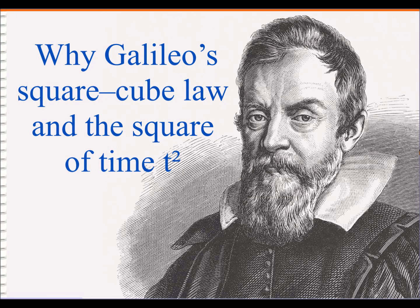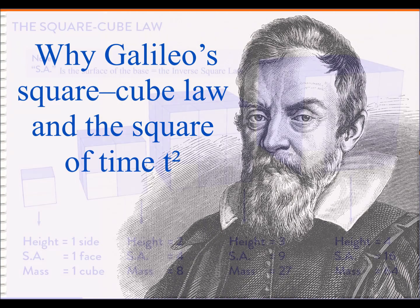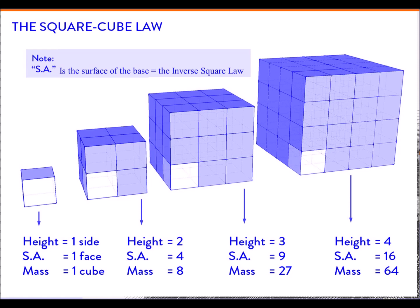Galileo's square-cube law is a principle that when an object undergoes a proportional increase in size, its new volume is proportional to the cube of the multiplier, and its new surface area is proportional to the square of the multiplier.